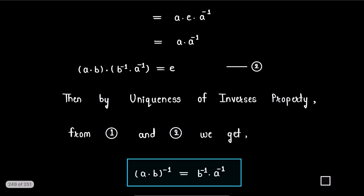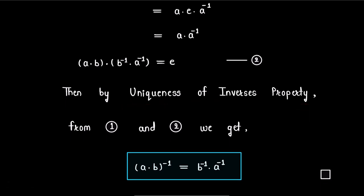So by the uniqueness of inverses property in group, we have from 1 and 2 that (a·b)^(-1) is equal to b^(-1)·a^(-1), and this proves the given theorem.